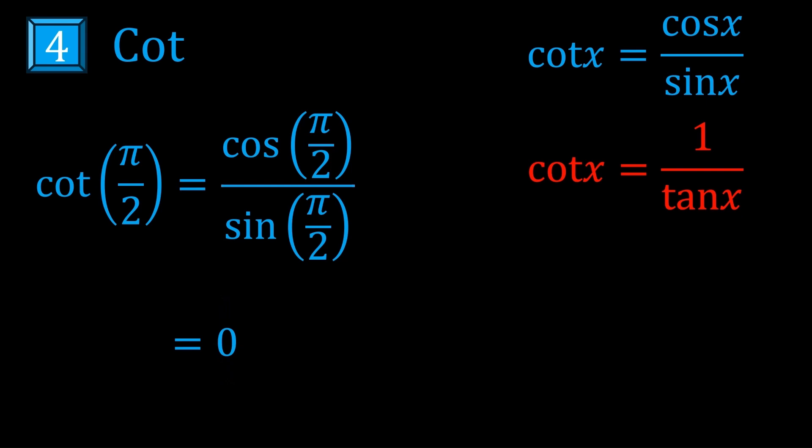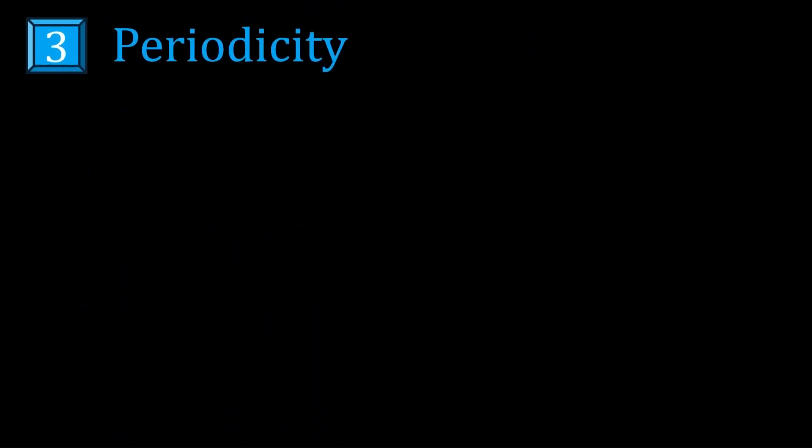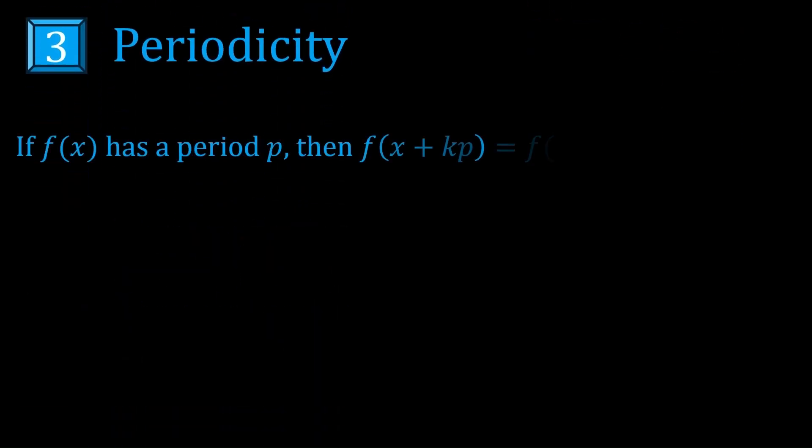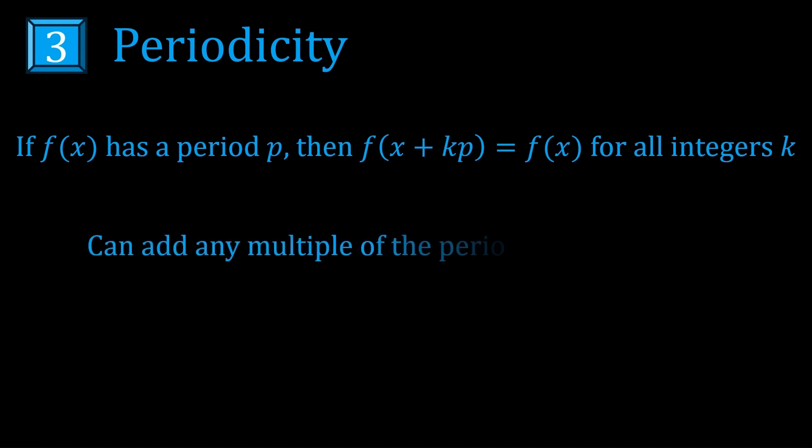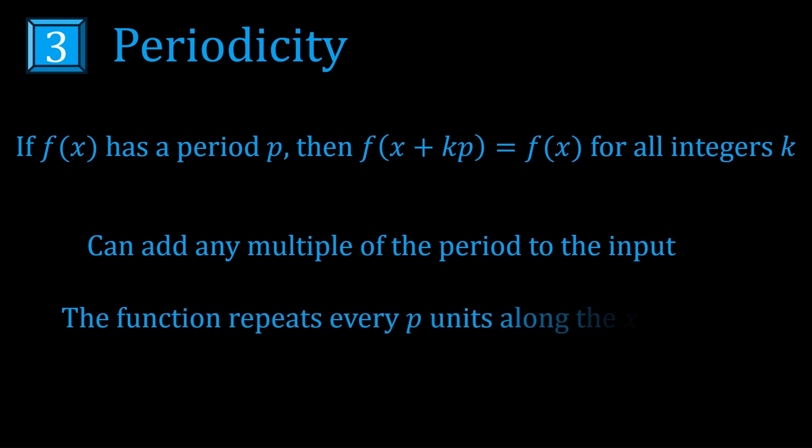At number 3 we have periodicity. If a function is periodic, then it means you can add any multiple of the period to the input and not have the output change. It also means that as you go along p units on the x-axis any number of times, then the function is going to repeat itself.